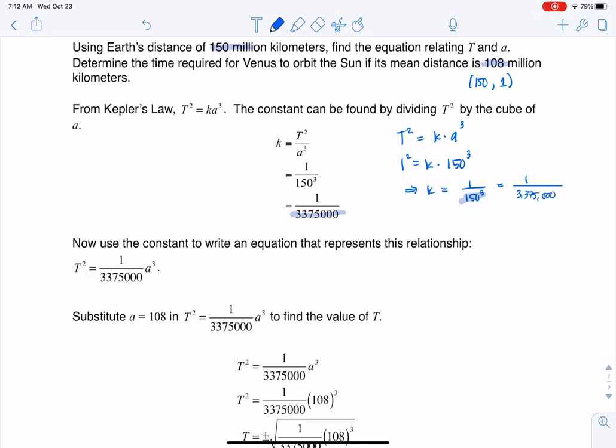But that is our constant of variation, so what I can do is I can put that number in here for K. Now in the homework solutions, I solved for K, and then I plugged in the numbers. So you can solve for K and then plug in the numbers, or you can just use your variation equation and substitute in. Either way, you're going to get the same K value.